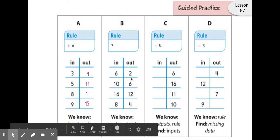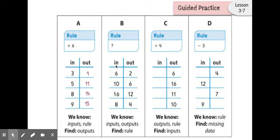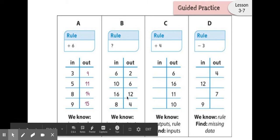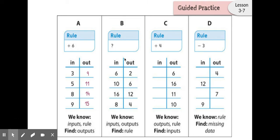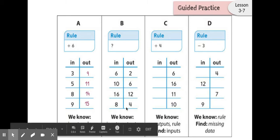Sometimes we know all of the inputs and outputs, but we have to figure out the rule. First, I want to look at the numbers and see if they're getting larger or smaller. Going from six to two, ten to six, and sixteen to twelve, I know they're getting smaller, so it's going to be a subtraction rule. Now I have to figure out how many I'm subtracting. Six minus two is four, ten minus six is four, sixteen minus twelve is four, and eight minus four is four. So the rule is minus four.